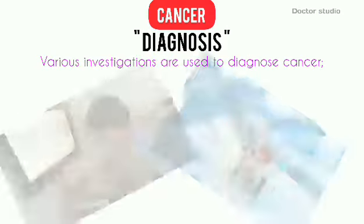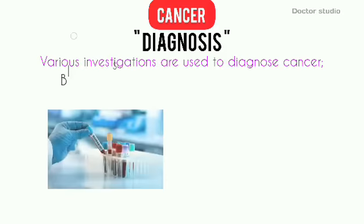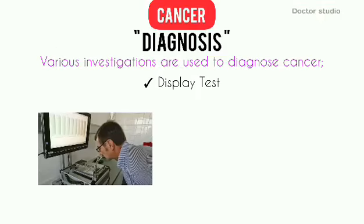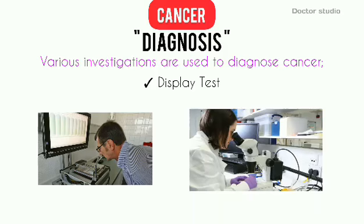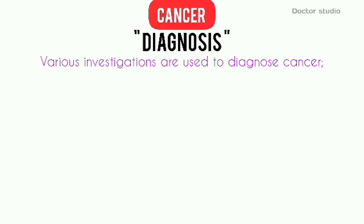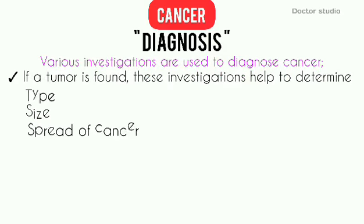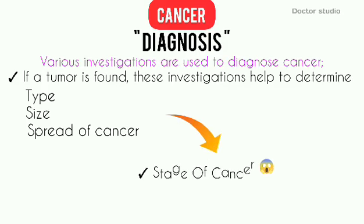These might include blood tests, imaging tests, and a biopsy, where cells are taken for examination under a microscope. If a tumor is found, these investigations help determine the type, size, and spread of cancer, which is called its stage.